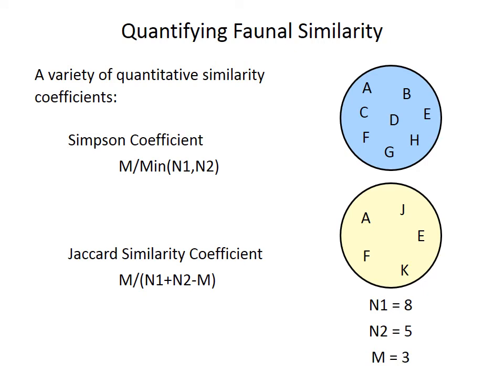Literally dozens of different similarity coefficients have been proposed over the years. Two widely used ones, although they all have various shortcomings, are the Simpson coefficient and the Jaccard similarity coefficient. The Simpson coefficient is calculated as M, the number of shared taxa, divided by the number of taxa found in the smaller of the two regions. In our previous example, there are three shared taxa and the smaller region contains five, so the Simpson coefficient S is three divided by five, or 0.6. In theory, the Simpson coefficient can vary between zero, where there are no shared taxa, and one, where all the taxa are shared — perfect similarity. The Jaccard coefficient is given as M divided by N1 plus N2 minus M, which in this case is three divided by eight plus five minus three, or 0.3. The Jaccard coefficient can also, in theory, range between zero and one, but only if the two regions have equal numbers of species. When one region is smaller, the maximum potential value of the Jaccard coefficient is also reduced.